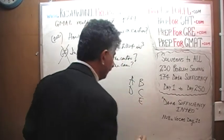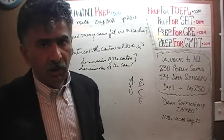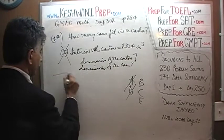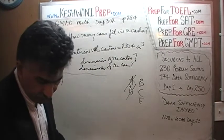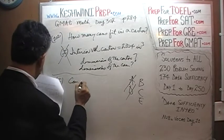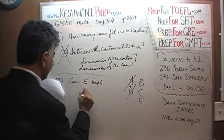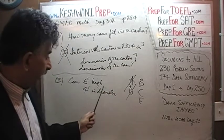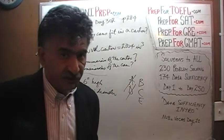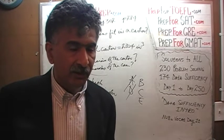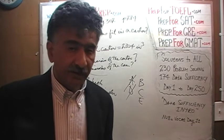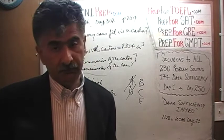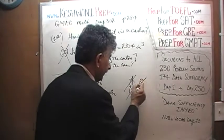Now that we have established that the first statement by itself is not enough, the answer cannot be A or D — it would have to be B, C, or E. The second statement tells us that each can is 6 inches high and 4 inches in diameter. Looking at the second statement by itself — it gives us the dimensions of the can, but tells us absolutely nothing about the dimensions of the carton. Therefore, the second statement by itself cannot do the job.